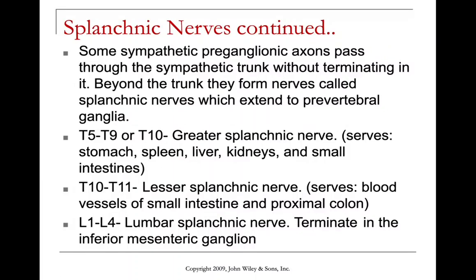Splanchnic nerves pass through the sympathetic trunk without terminating and extend to the prevertebral ganglia. Between T5 and T9-10, the greater splanchnic nerve goes to the stomach, spleen, liver, kidneys, and small intestine. T10 and T11 give rise to the lesser splanchnic nerve going to blood vessels of the small intestine and proximal colon. L1 through L4 give rise to the lumbar splanchnic nerve, terminating in the inferior mesenteric ganglion.